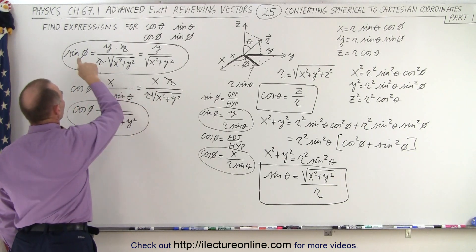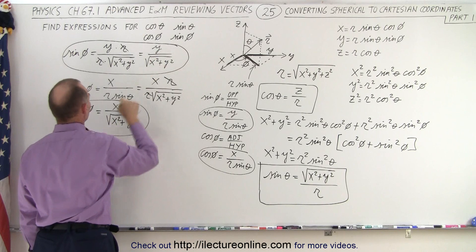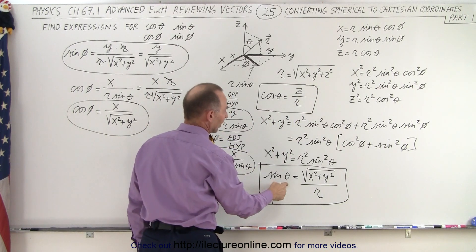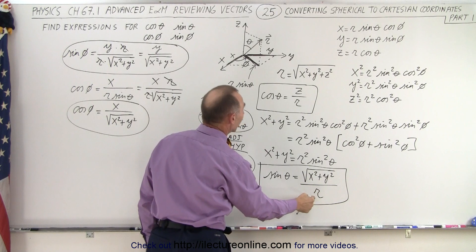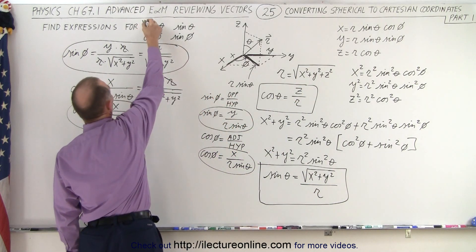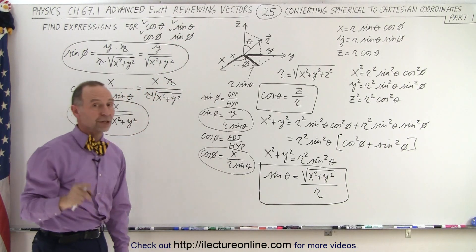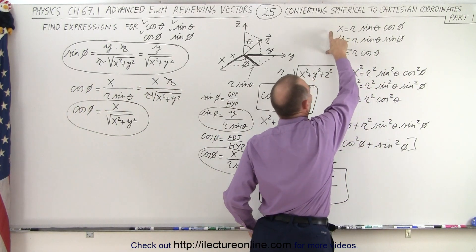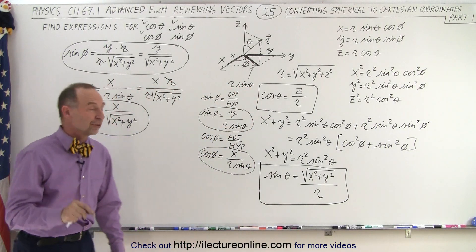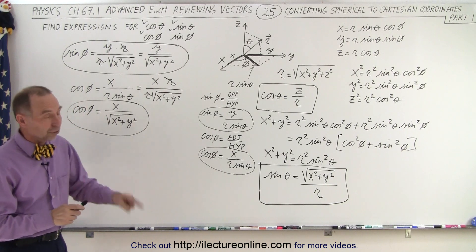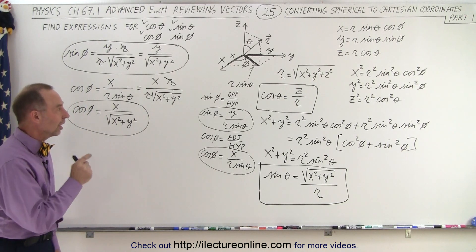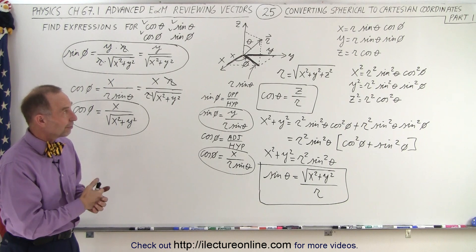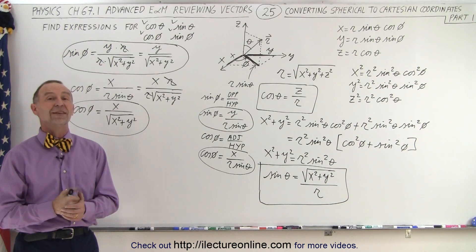We now have sine of phi defined in terms of x and y, cosine of phi in terms of x and y, cosine of theta in terms of z and r, and sine of theta in terms of x, y, and r — where r equals the square root of x squared plus y squared plus z squared. We have defined all four trigonometric functions and are now ready to convert any function from spherical to Cartesian coordinates and find its divergence.